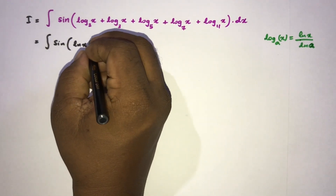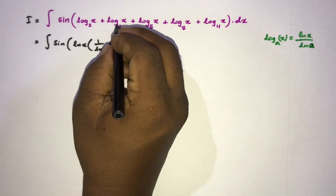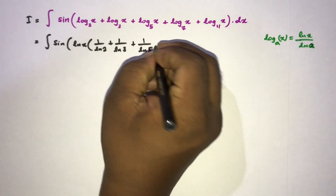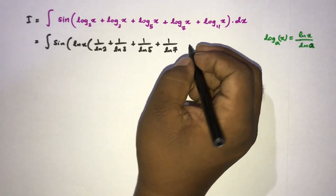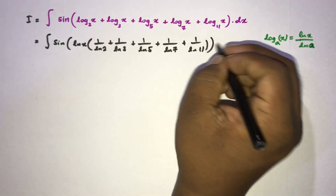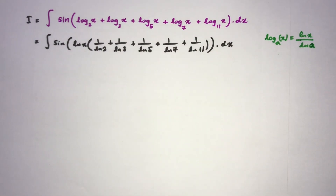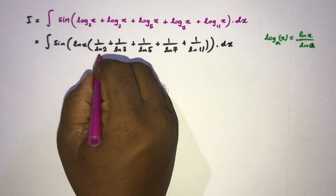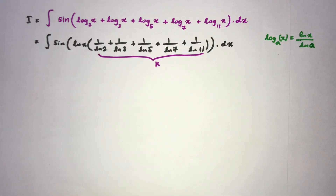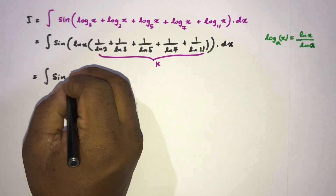Factoring out ln(x), we get ln(x) times the sum: 1 over ln(2) plus 1 over ln(3) plus 1 over ln(5) plus 1 over ln(7) plus 1 over ln(11), all times dx. This sum of constants we call k, so our integral becomes the integral of sin(k · ln(x)) dx.